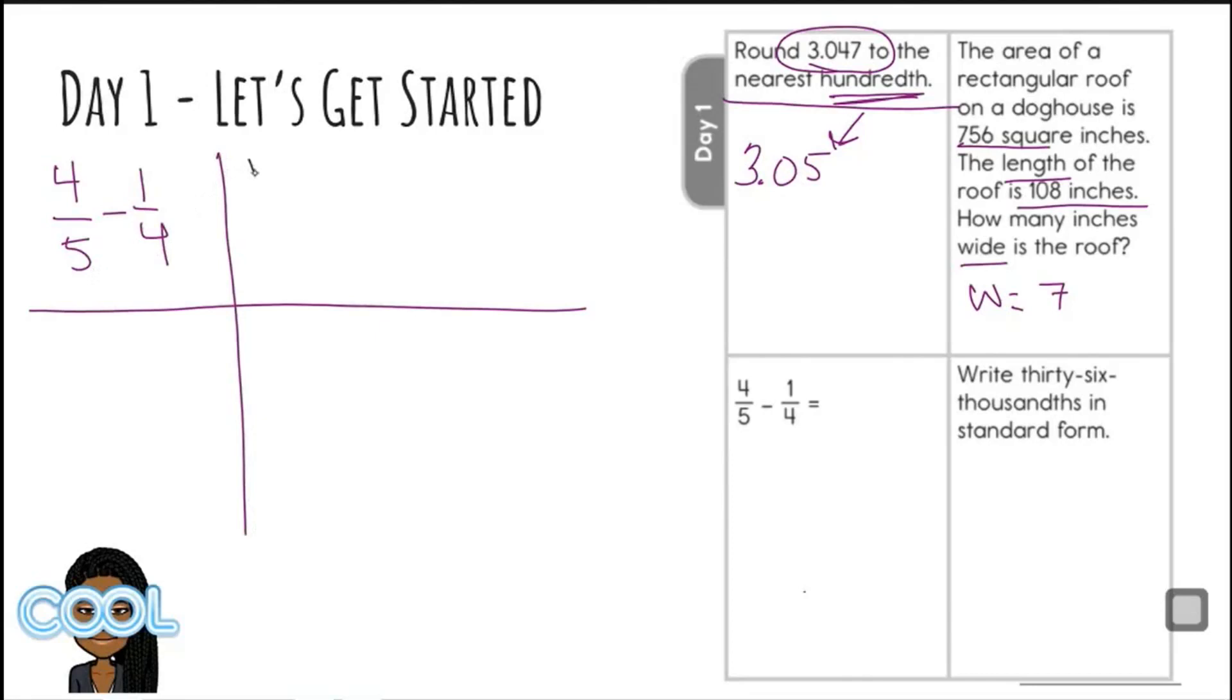Looking at the denominators, I have 4 and I have 5. So say them with me: 4, 8, 12, 16, 20, and 24. I'm going to stop right there. 5, 10, 15, 20, 25. And I'm going to stop right there. So I'm looking to see what number that they both have in common, but it has to be the least number that they have in common, and that would be 20. So I need to change both of these denominators to 20.